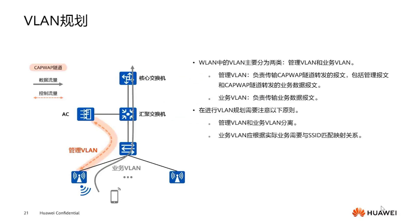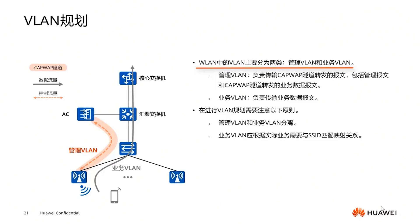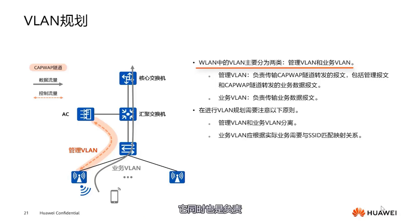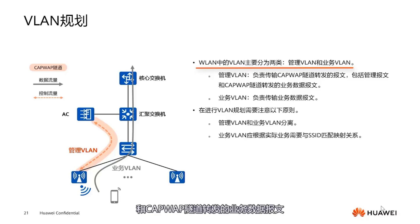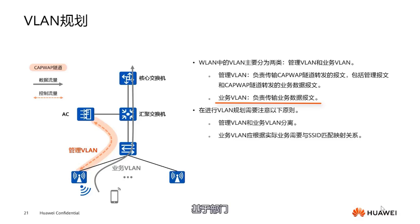Let's continue with network planning, including VLAN and IP address planning. There are basically two types of VLANs: Management VLAN and Service VLAN. In wired networks, these also include Management and Service VLANs. But note that WLAN's Management VLAN is different from wired network VLANs. In WLAN, it's typically called the VLAN for managing APs, and it also carries CAPWAP tunnel forwarded packets, including management messages and service data packets forwarded through CAPWAP tunnels. Service VLAN is responsible for carrying service data packets, usually divided into various forms based on departments or services to form different VLANs.